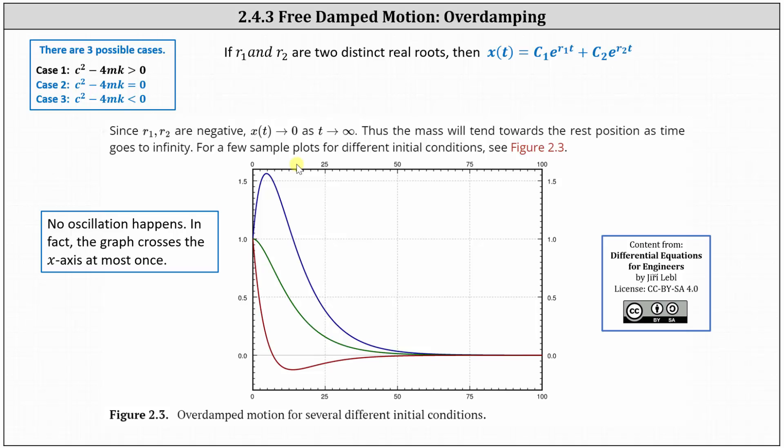And here are a few sample plots for overdamping. Notice no oscillation occurs, and in fact, the graph crosses the x-axis at most once.